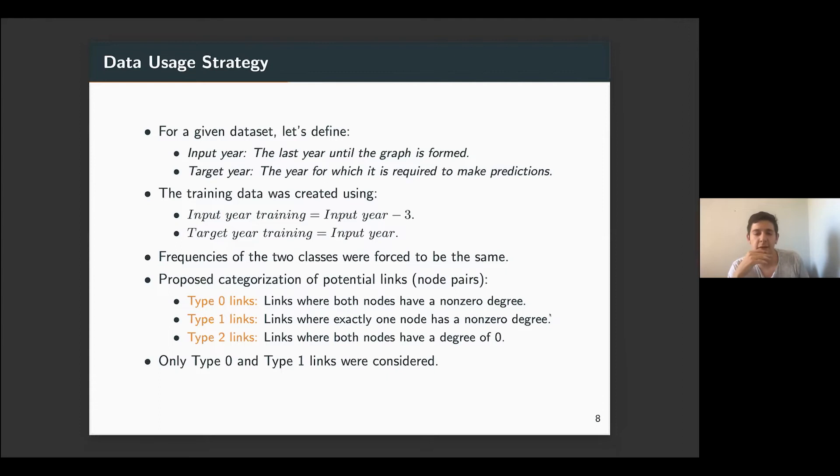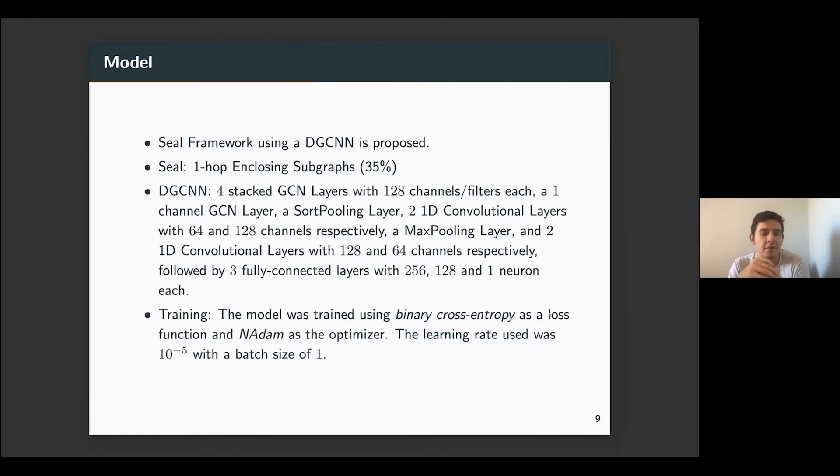The potential links for training were chosen mostly at random. There were only two restrictions made. The frequency of the two classes were forced to be roughly the same. We use like 10,000 in total, so like 5,000 for each class. For the second restriction, we propose a categorization for the potential links. So type 0 links refers to the links where both nodes have a non-zero degree. Type 1 refers to the links where one node and only one node has a non-zero degree. And type 2 are the links where both nodes have a degree of zero. So we have the three types of links. So only type 0 and type 1 links were considered for the training set. As type 2 links, they really don't have any kind of information.